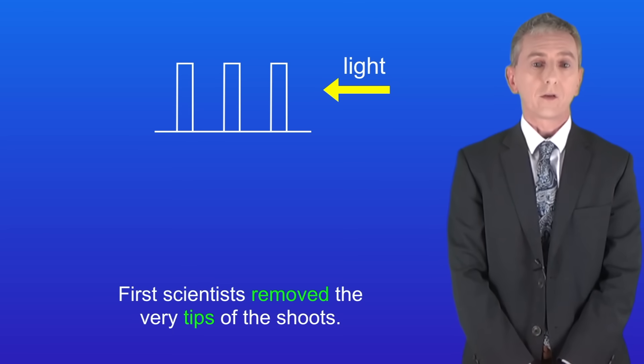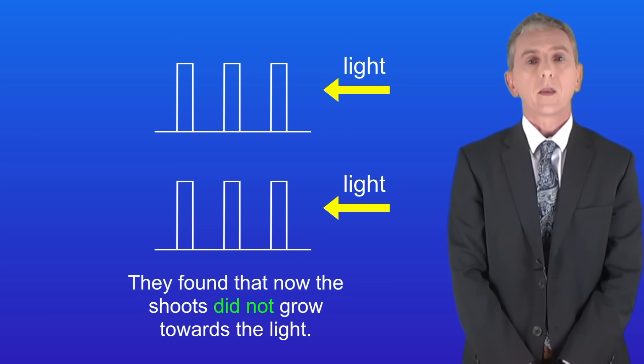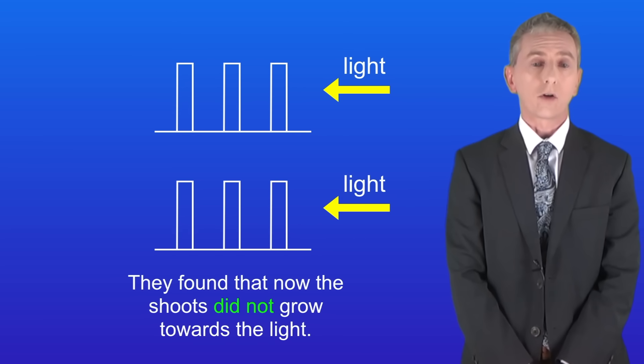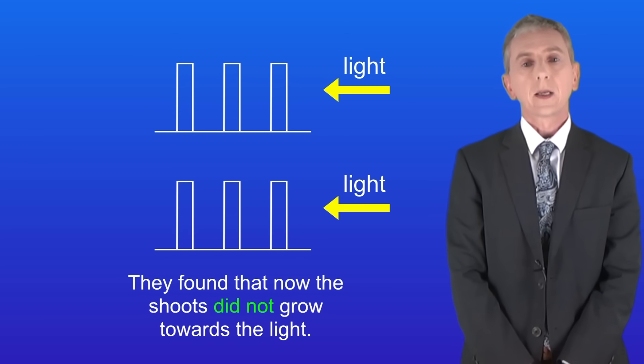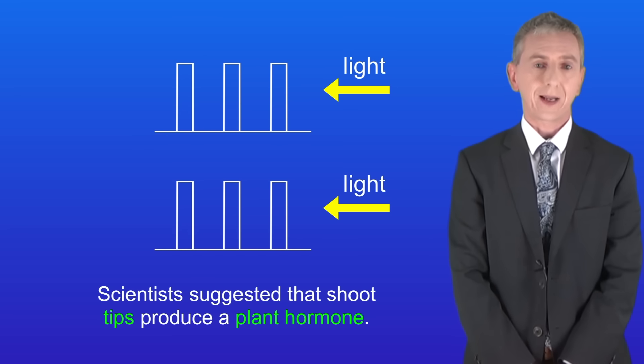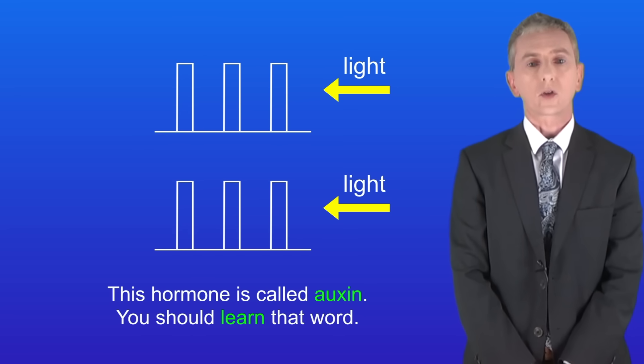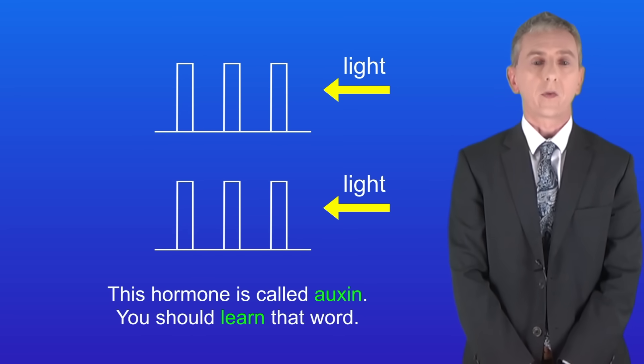First, scientists removed the very tips of the shoots. They found that now the shoots did not grow towards the light. Scientists suggested that shoot tips produce a plant hormone. This hormone is called auxin, and again you should learn that word.